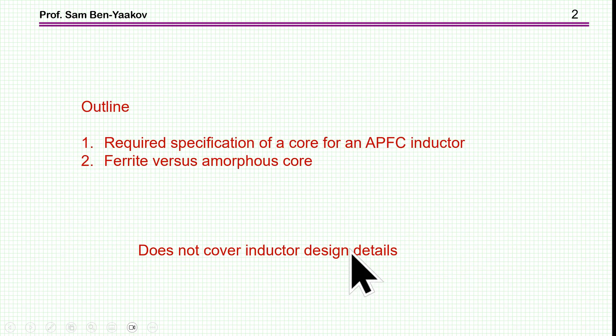Here is the outline. There are actually two sections to this presentation. First, I'm going to cover the required specifications of a core for Active Power Factor Correction Inductor. And then I'm going to compare ferrite versus amorphous core for this type of inductor. I'm not going into the actual design of the inductor, hopefully I'll do it in a forthcoming video.